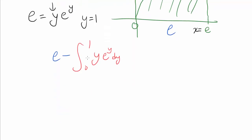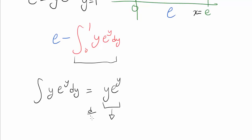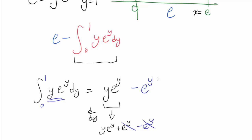How do we anti-differentiate y times e to the y? One way is integration by parts. Or notice that differentiating y·e^y gives y·e^y plus e^y — but we have that unwanted extra e^y. We want a function whose derivative is exactly y·e^y. Easy solution: use y·e^y minus e^y. Differentiating this gives y·e^y plus e^y minus e^y, which is y·e^y, exactly as needed. So we know how to anti-differentiate this.